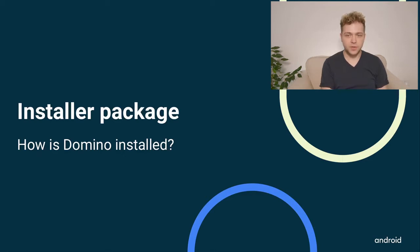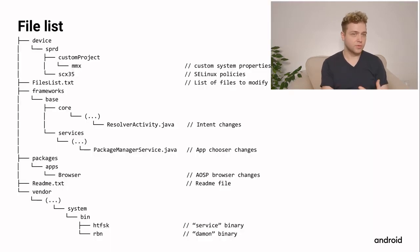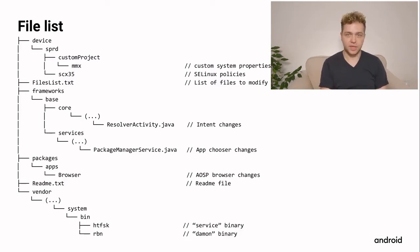The first thing to look at is the installer package, which tells us how Domino was installed. We were fortunate enough to find the whole source code zipped in an archive. That source code contained the binary, the actual Java source code for some of the modifications, a readme file, and some additional information.